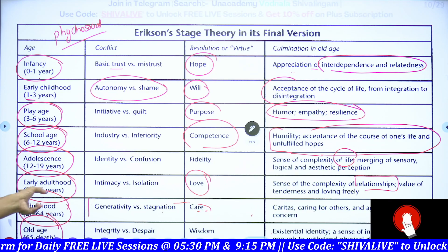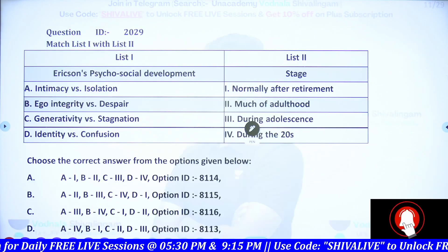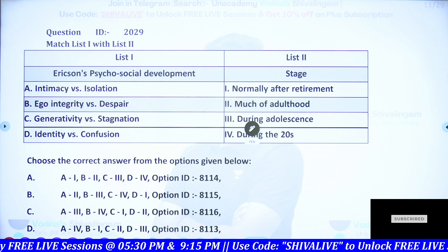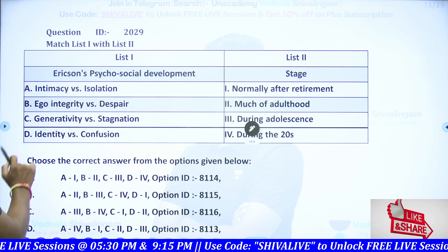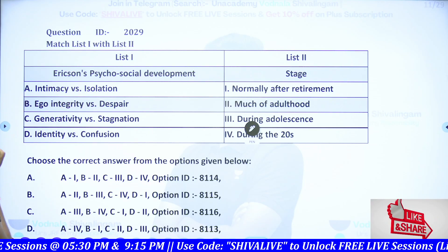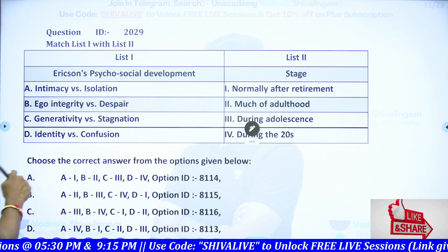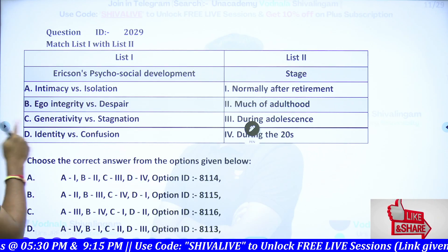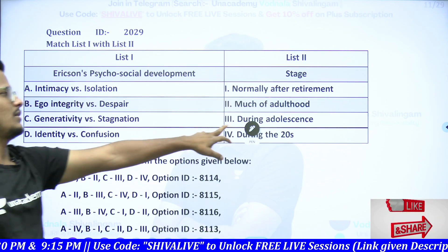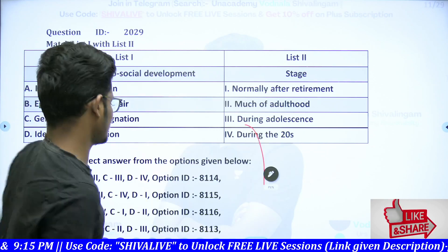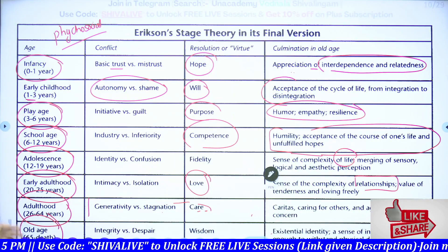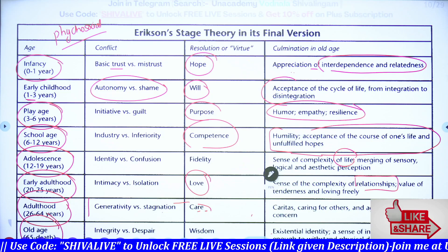So those are the eight stages. Now based on this, you can answer a practice question on Erikson's psychosocial development. The question gives: intimacy versus isolation, ego integrity versus despair, generativity versus stagnation, and identity versus confusion, and asks you to match them with the correct stages. I have explained all the stages and conflicts, so you can just match them.